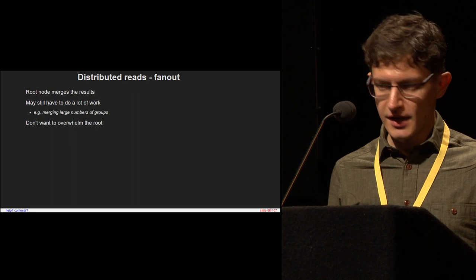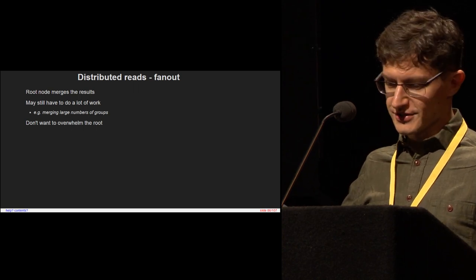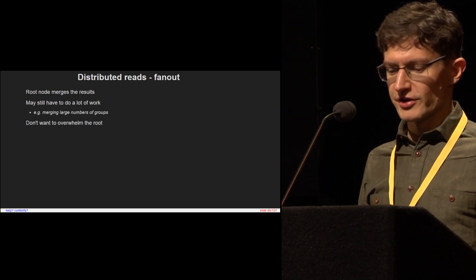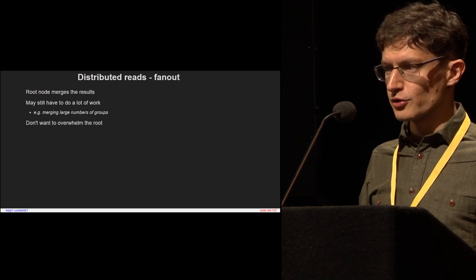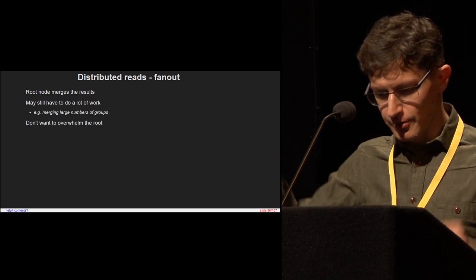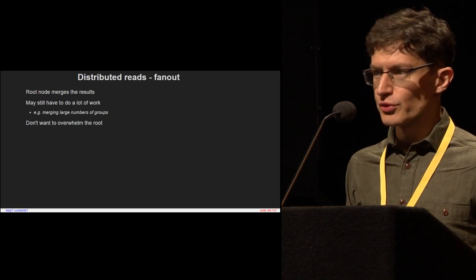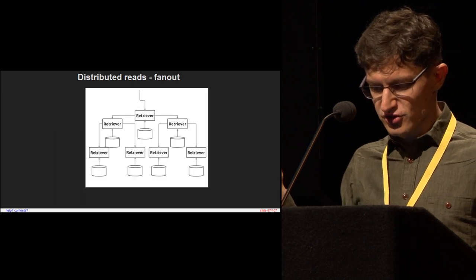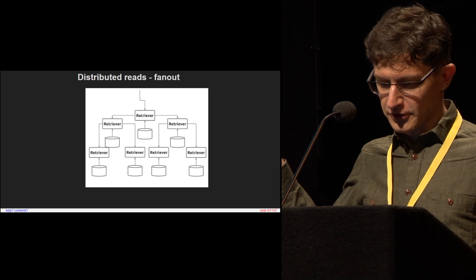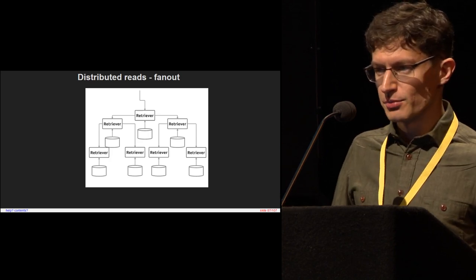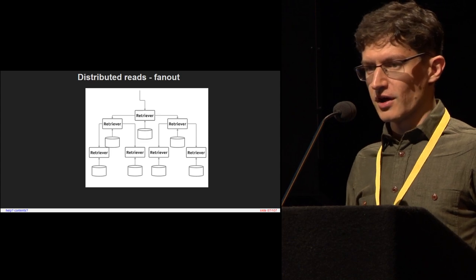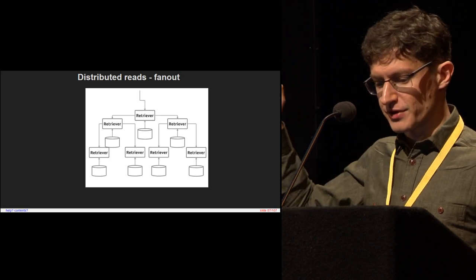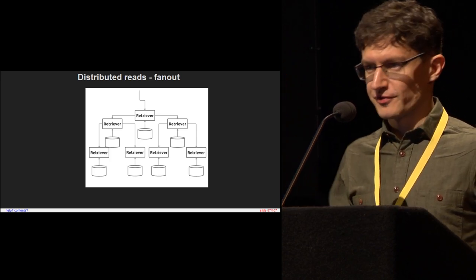We still have a root node that's taking all of this data and merging it together. In some cases this is going to be pretty memory intensive — for example, if we're computing a lot of groups, we could have a million groups coming back from each node. We don't want the root node to fall over. So we can do the distribution trick again and do a sort of n-level fan out. This is something that Scuba does — they experimented and found a good factor for how many nodes should fan out before splitting into another level of the tree. If they found that value is five, we use the same value.